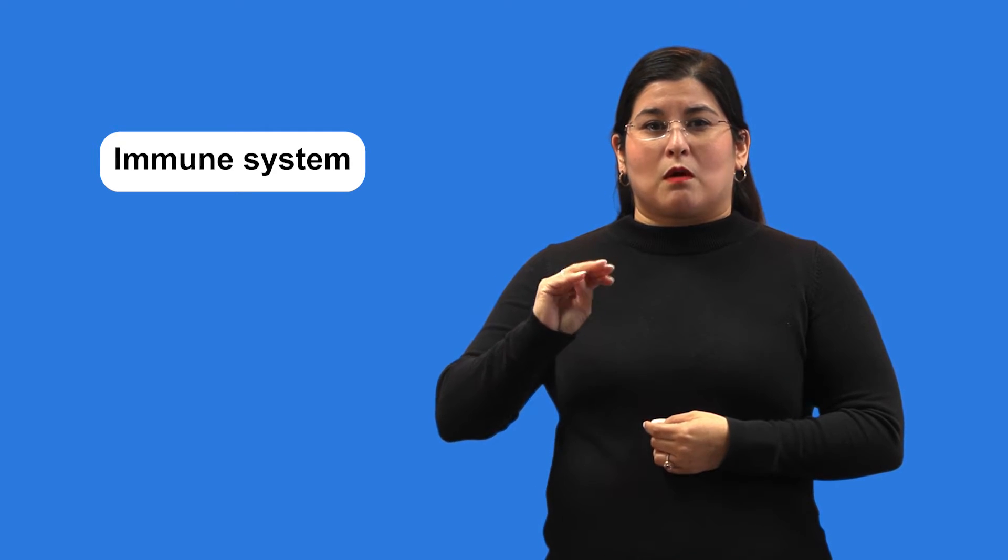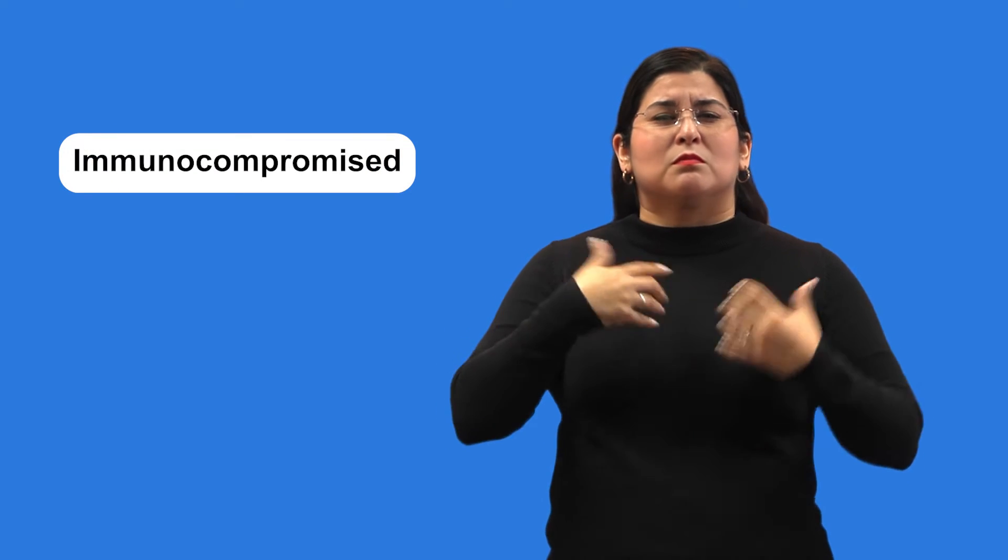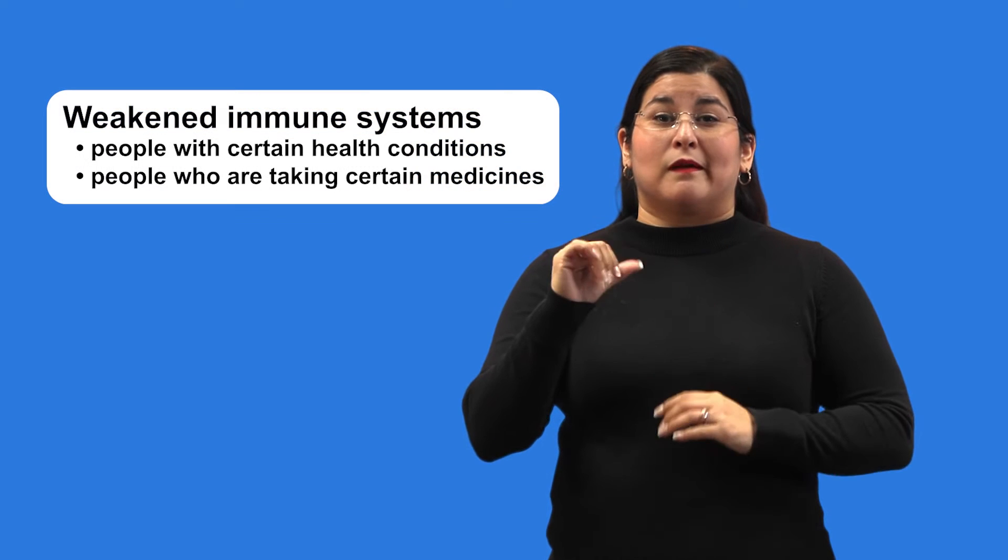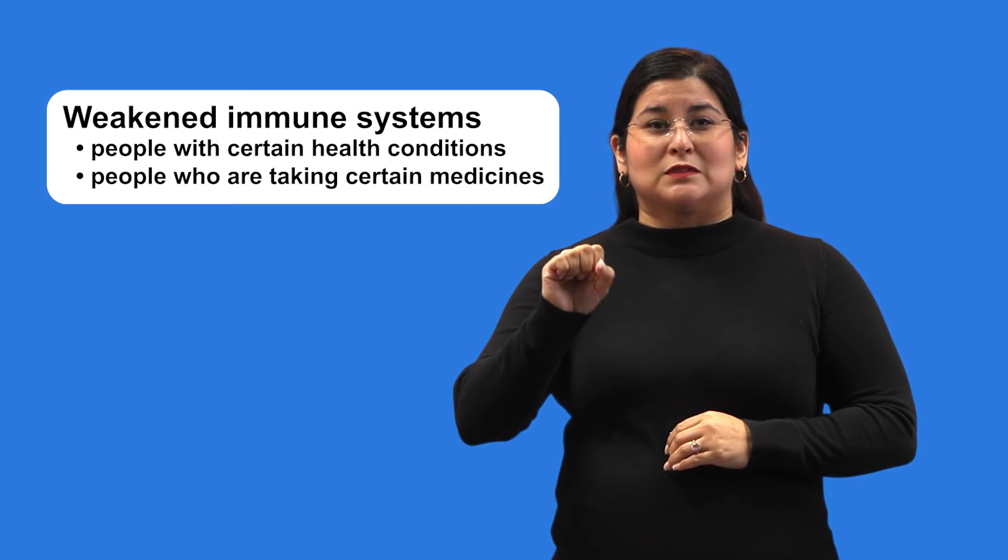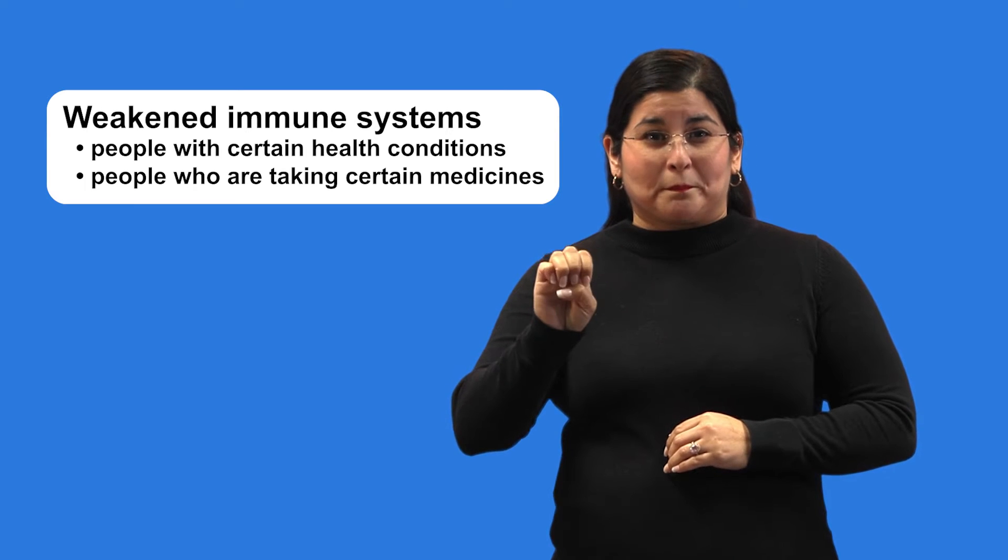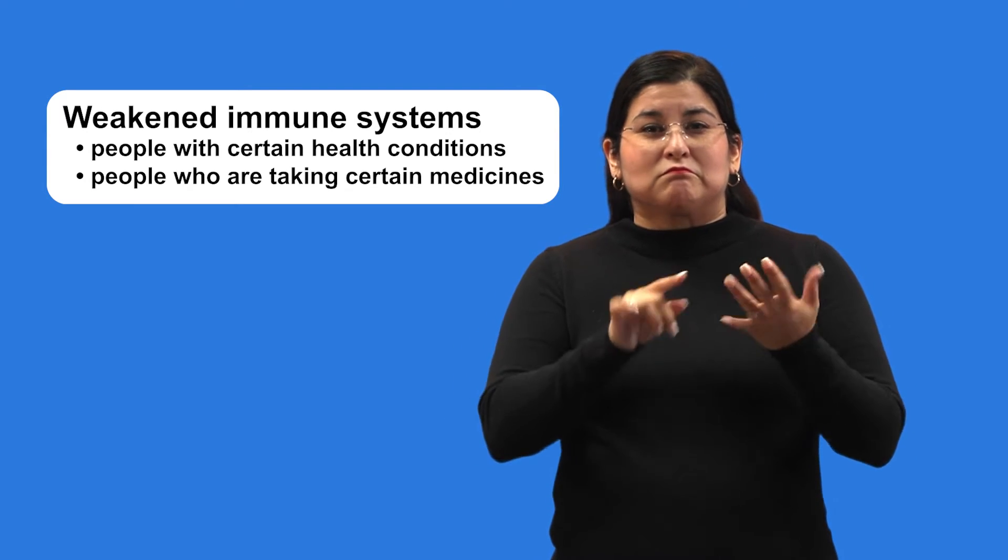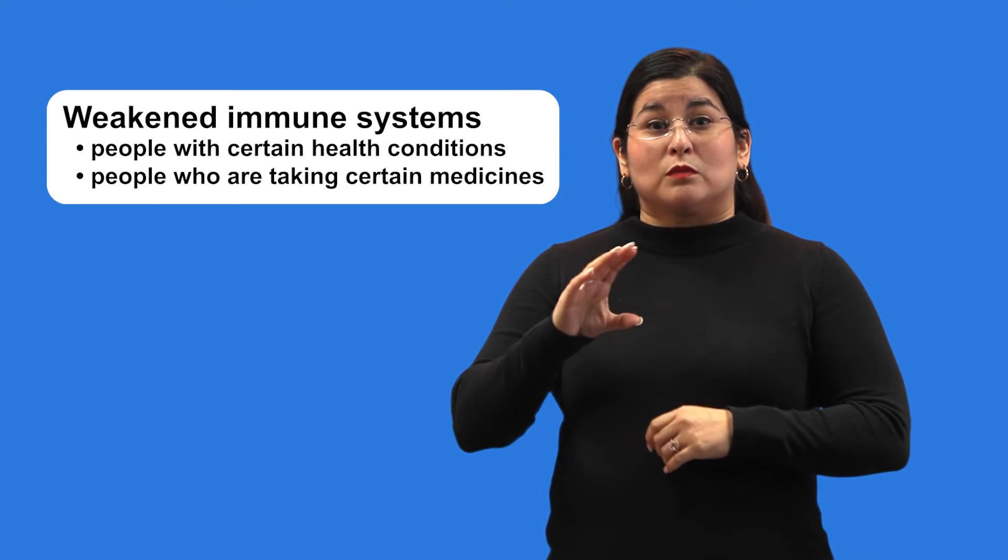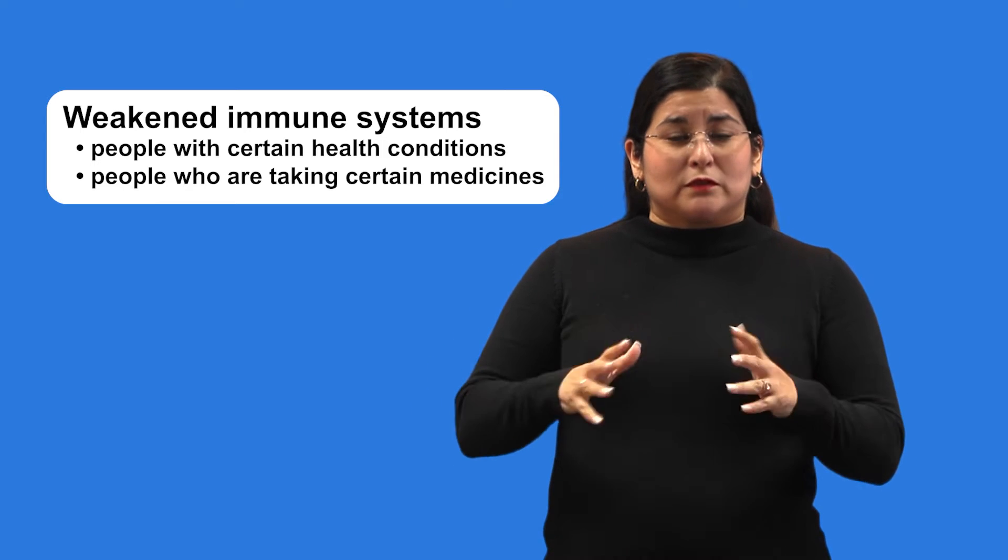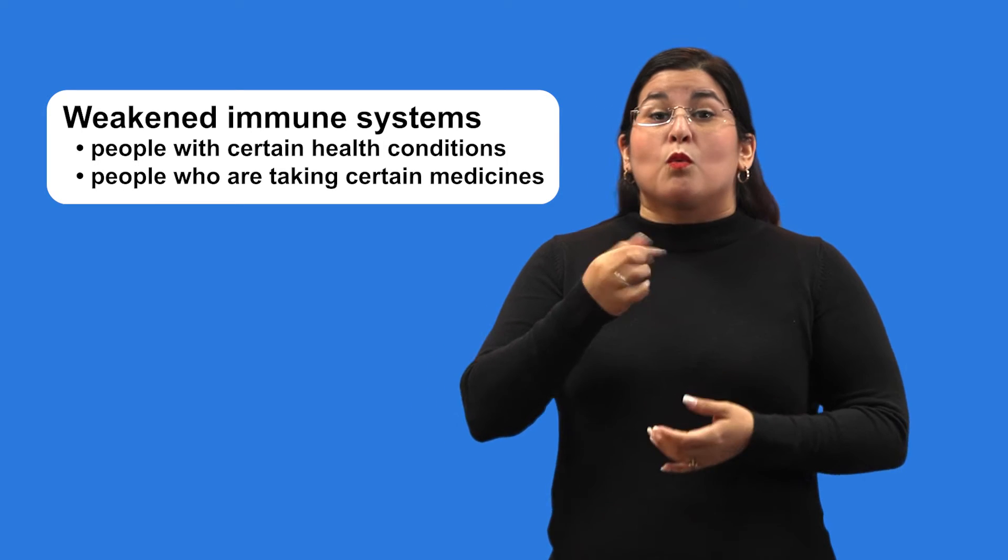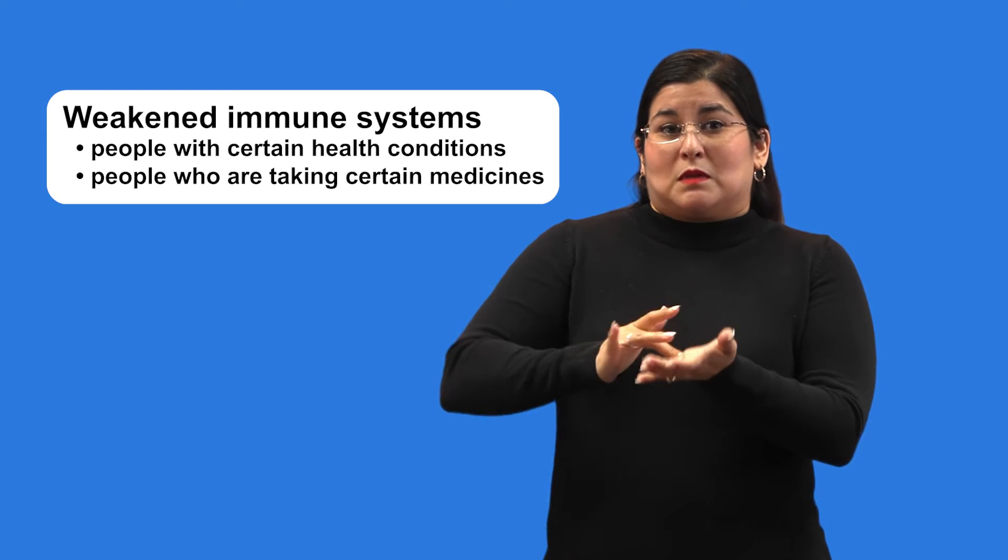Doctors often use the word immunocompromised to describe people with weakened immune systems. People with weakened immune systems include people with certain health conditions, like some types of cancer, HIV, or DeGeorge syndrome, and people who are taking certain medicines. This includes people who are going through cancer treatment, taking medicine after an organ transplant, or taking steroids for chronic health conditions.